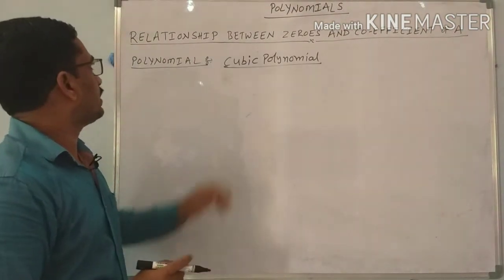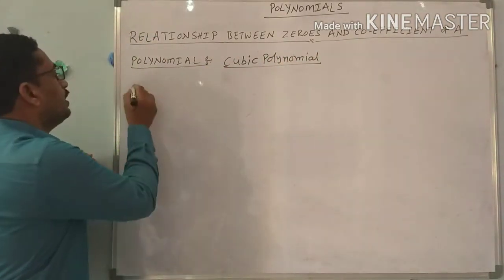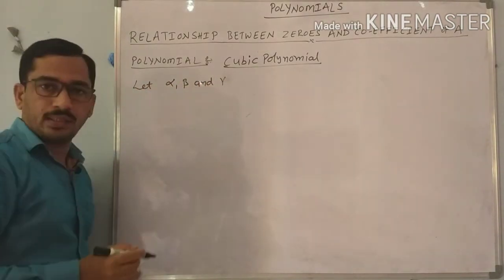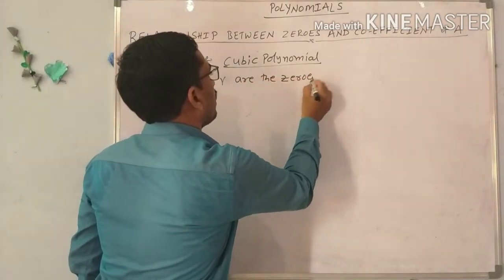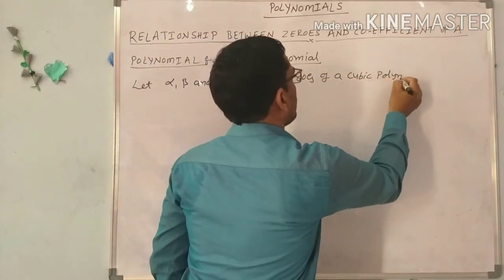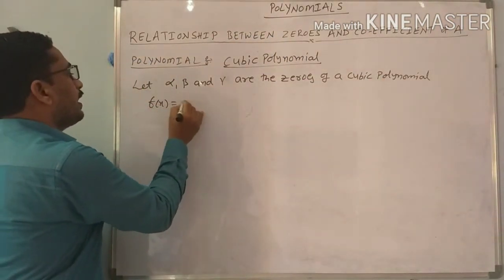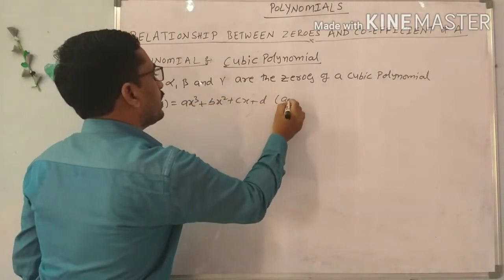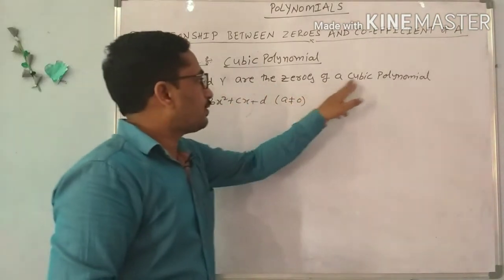Now the relationship between the zeros and the coefficients of a cubic polynomial. Let alpha, beta, and gamma be the zeros of a cubic polynomial F of X equals AX cubed plus BX squared plus CX plus D, where A is not equal to zero.